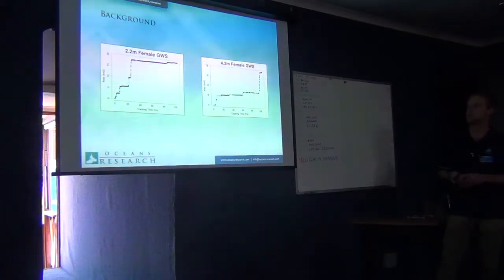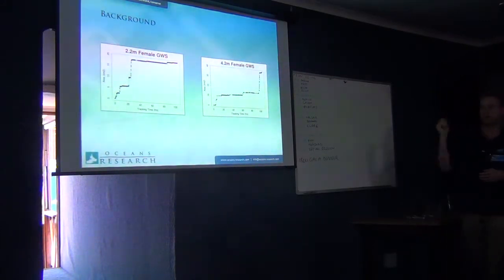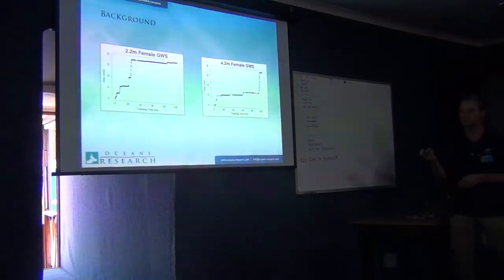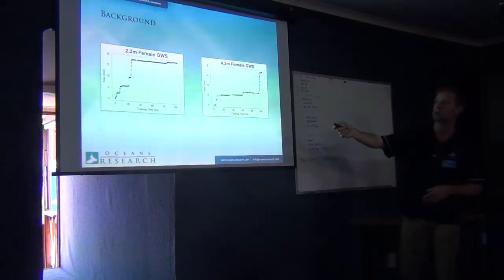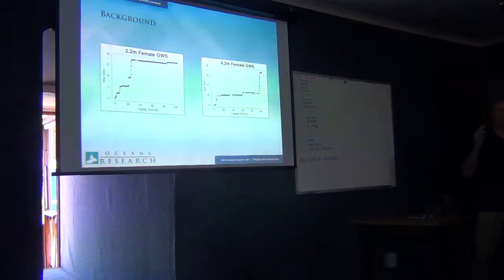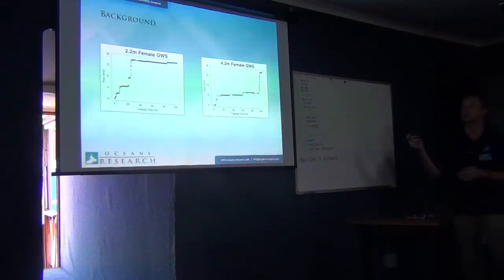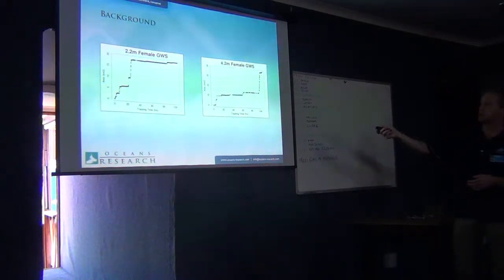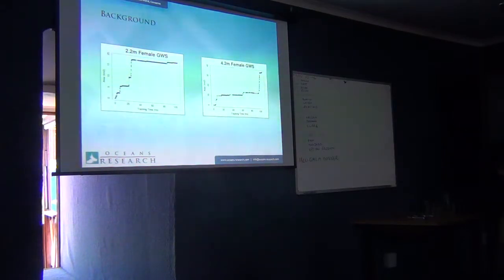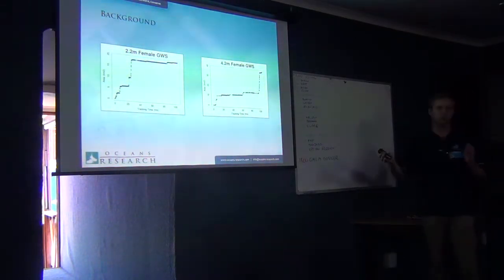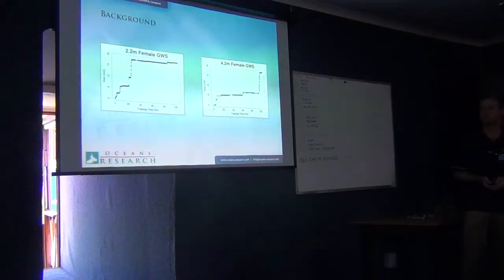These two graphs represent the increase in area as we sample of two white sharks: a 2.2-meter female and a 4.2-meter female tracked here in Mossel Bay. These are the two longest recorded active tracks of a white shark - 106 consecutive hours and 107 hours. In this first individual, we see this asymptote after about 30 hours. That's generally what you look for to establish that you've sampled enough to say it's an animal's home range. But in this other individual at 107 hours, we don't really get an asymptote. There's this question of whether we actually achieved its home range.